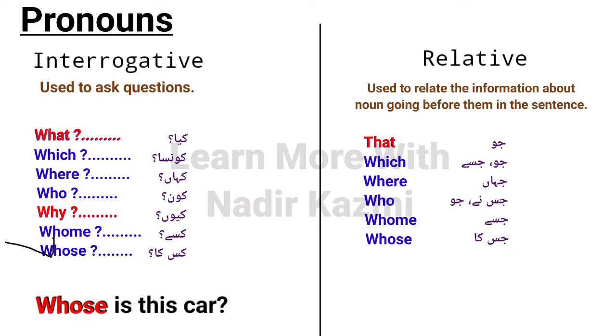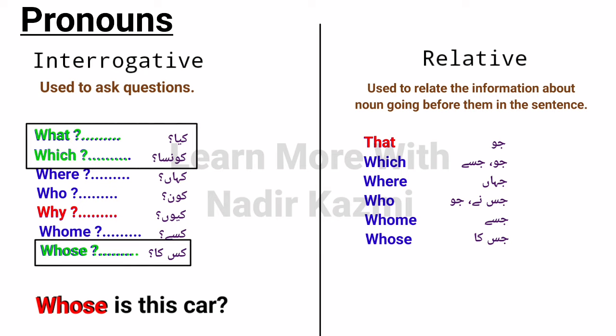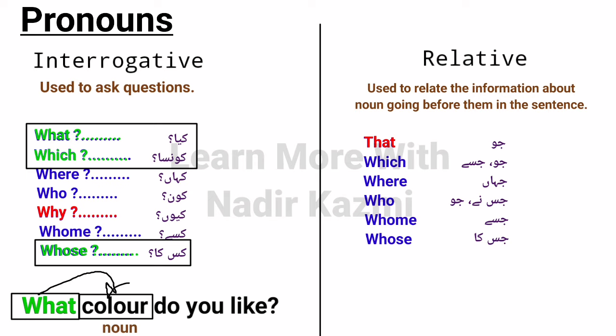One more thing to keep in mind: 'what', 'which', and 'whose' can also be used as interrogative adjectives. They become interrogative adjectives when they carry nouns immediately after them. For example: 'What color do you like?' — here 'what' is followed by the noun 'color', so it becomes an interrogative adjective. Similarly, 'Which car is yours?' — 'which' is followed by noun 'car', making it an interrogative adjective. 'Whose car is this?' — same rule applies.